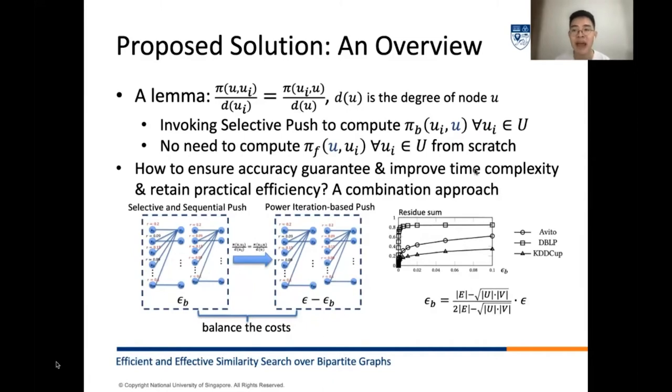To achieve this goal, we test the remaining residual at all nodes after the selective and sequential push on various epsilon_b on several real-world datasets. Note that a small residual threshold implies power iteration-based push will consume a small amount of cost. We found setting epsilon_b at the right bottom can achieve a good performance in practical efficiency. Subsequently, we explain the details of selective push and sequential push and power iteration-based push.